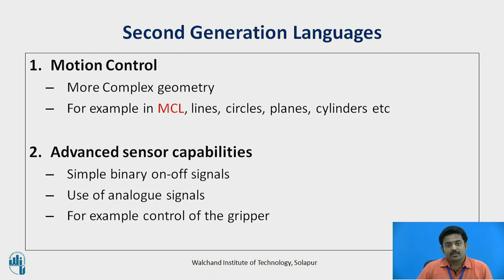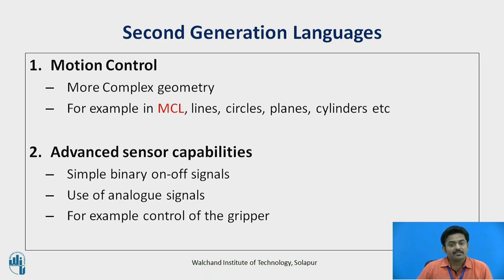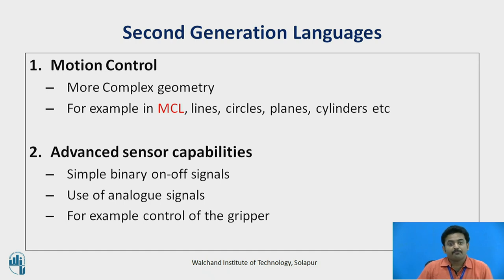Advanced sensor capabilities are a key enhancement in second generation languages. These typically include the capacity to deal with more than simple binary on/off signals and the capability to control devices by means of sensory data, including analog signals. For example, while first generation languages involve commands to simply open or close a gripper, second generation languages permit the control of sensored grippers that can measure force and pressure during closure against an object.